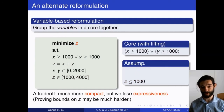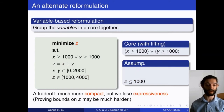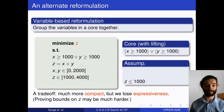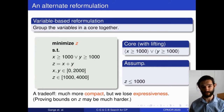However, there are cases where the shortest proof is exponentially worse, since proving bounds on z puts us back in the branch-and-bound world. It's a trade-off.